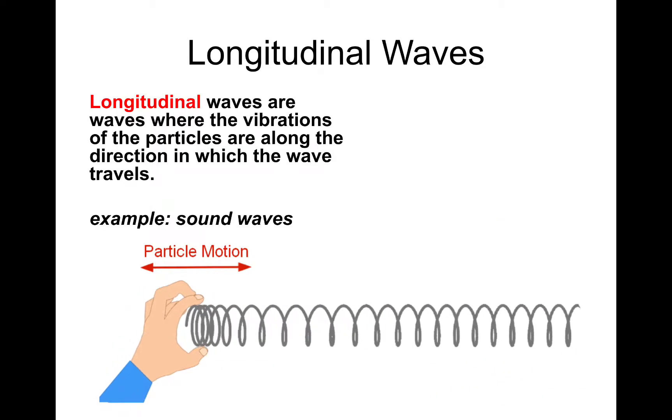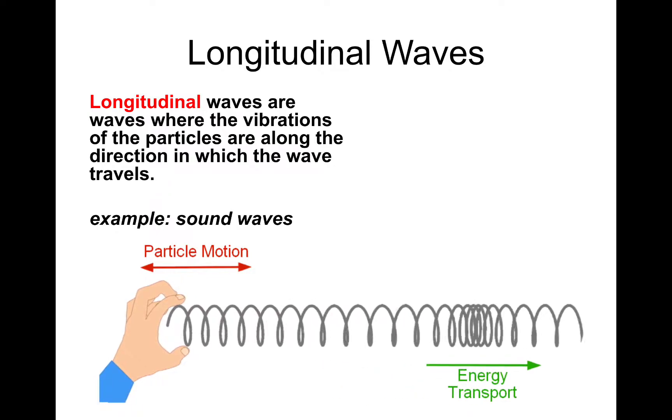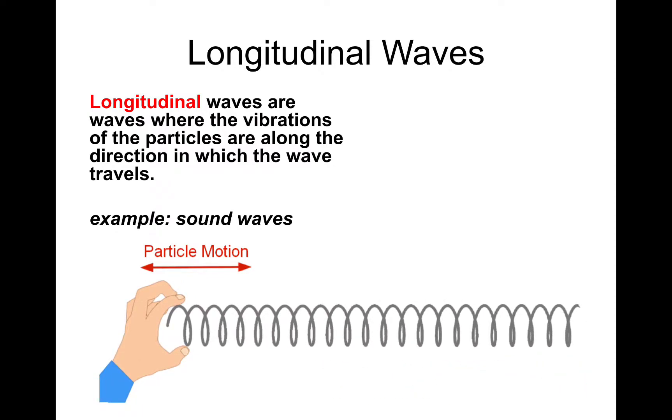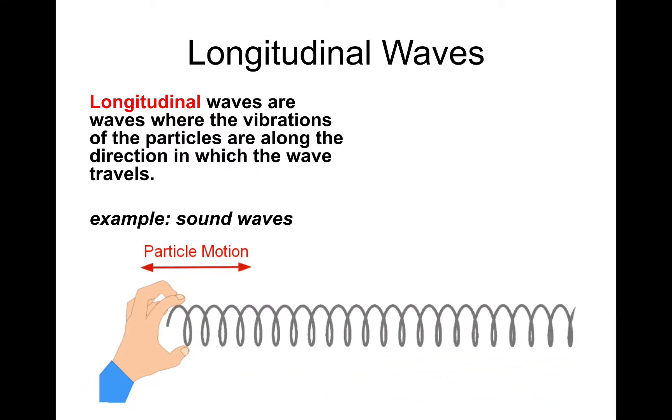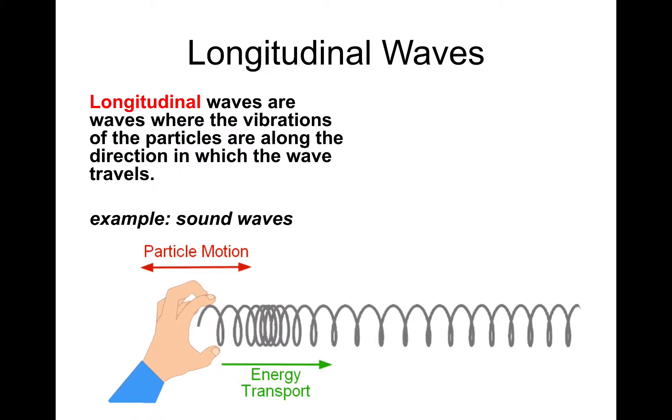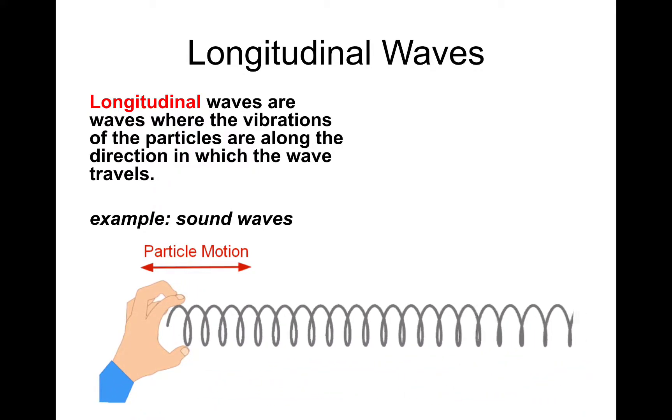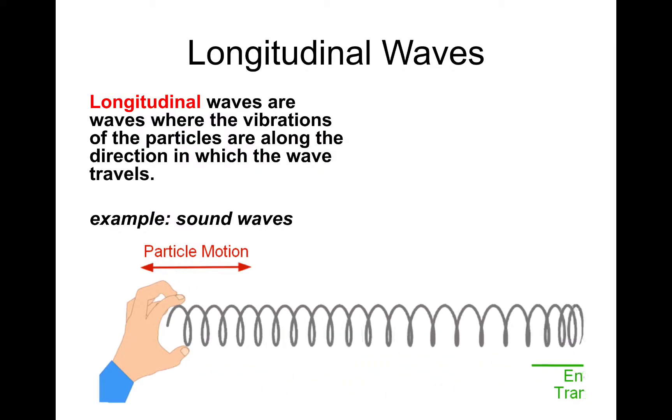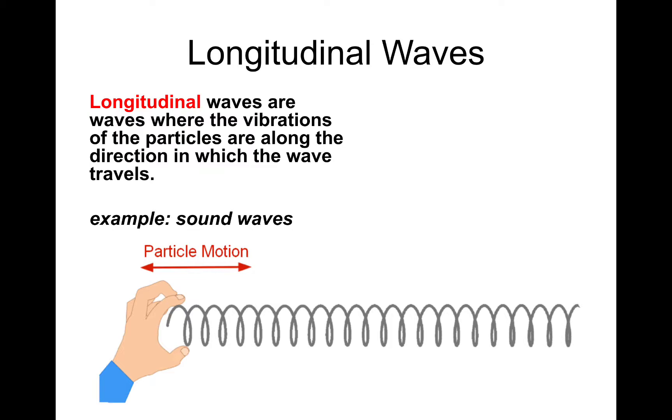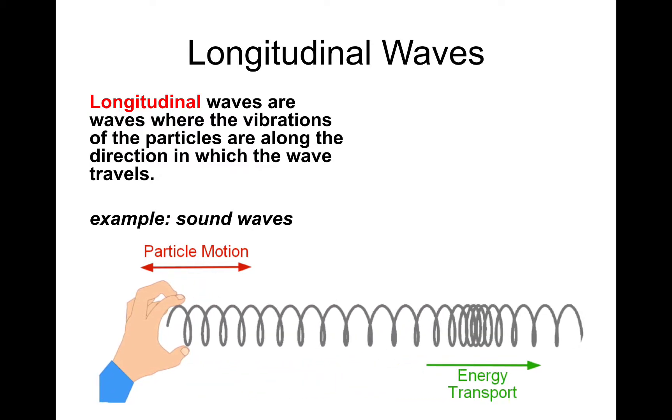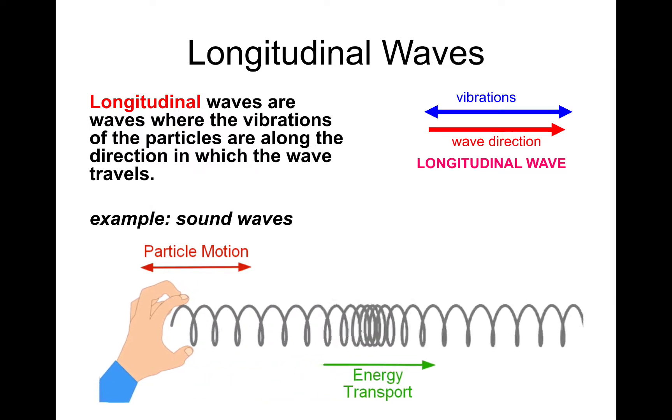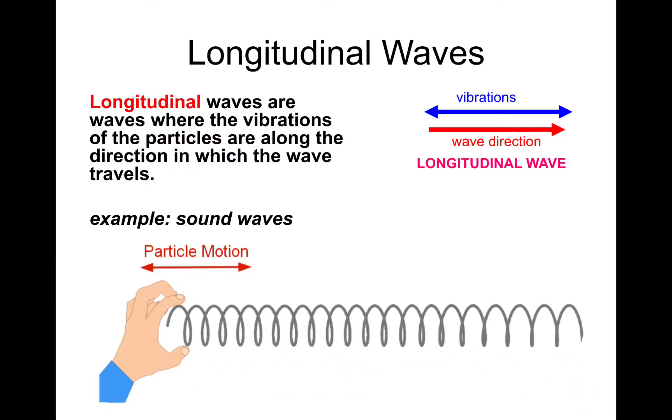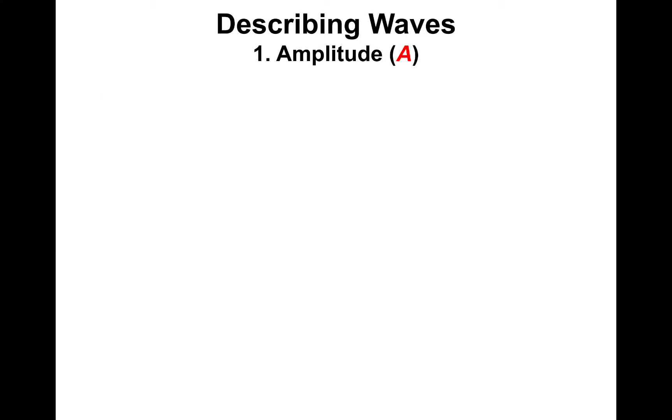So longitudinal waves are waves where the vibrations of the particles are along the direction in which the wave travels. You've got regions of compression and rarefaction, where the waves become more stretched out rather than compressed. And the particle motion is parallel. So the key word for transverse waves is perpendicular. The key word for longitudinal waves is parallel. So particle motion, parallel to energy transport. And an example is sound waves.